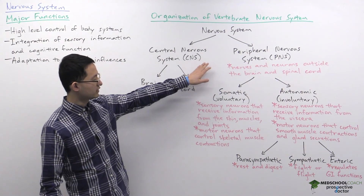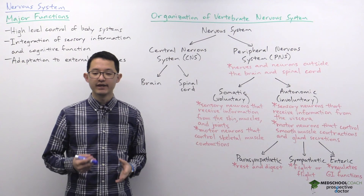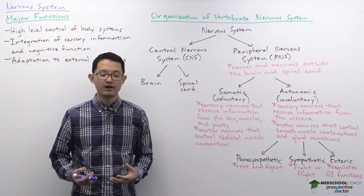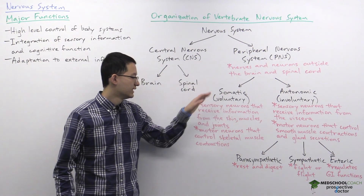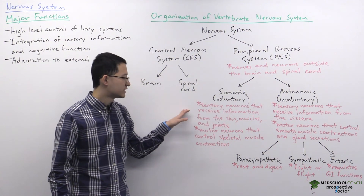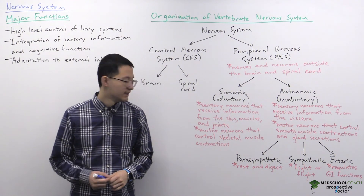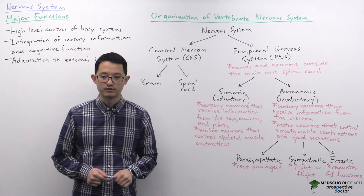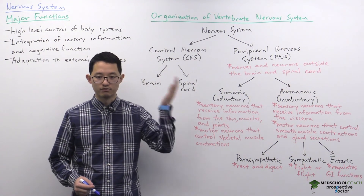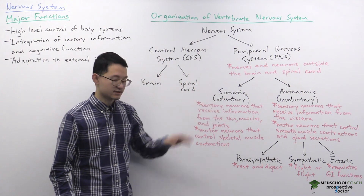Within the peripheral nervous system we can break this down into the somatic nervous system and the autonomic nervous system. The main distinction between them is whether or not they are voluntary. The somatic nervous system is voluntary. It includes sensory neurons that receive information from the skin, muscles, and joints, as well as motor neurons that control skeletal muscle contractions. So when you move your arms, that voluntary movement comes from the somatic nervous system.